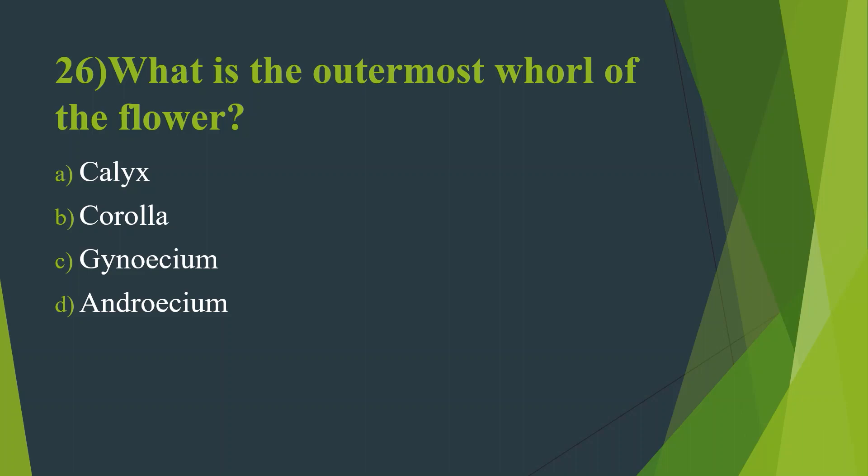Twenty-sixth question: What is the outermost whorl of the flower? Option A, Calyx. Option B, Corolla. Option C, Gynoecium. Option D, Androecium. Answer is Option A, Calyx.